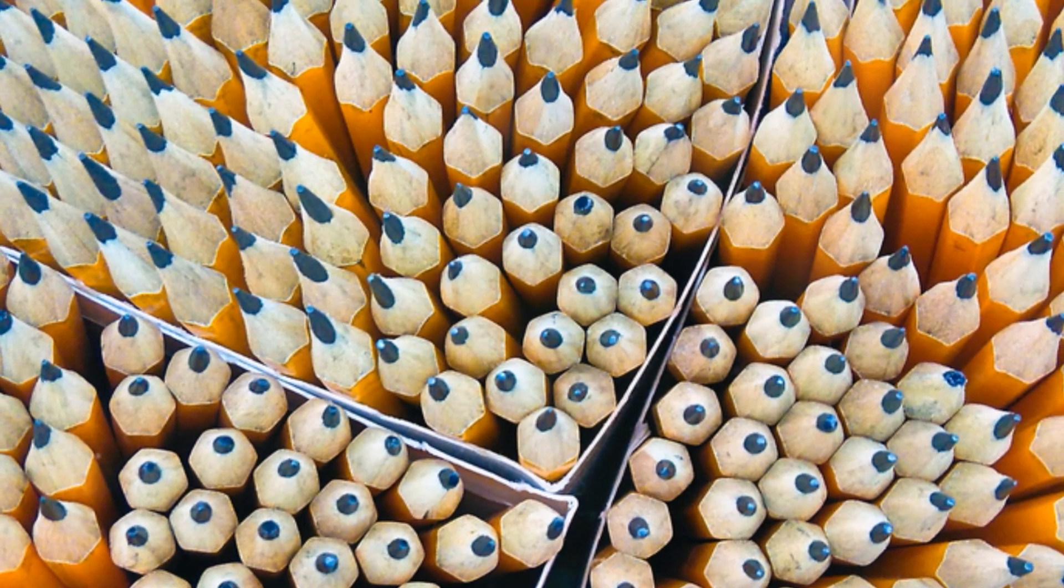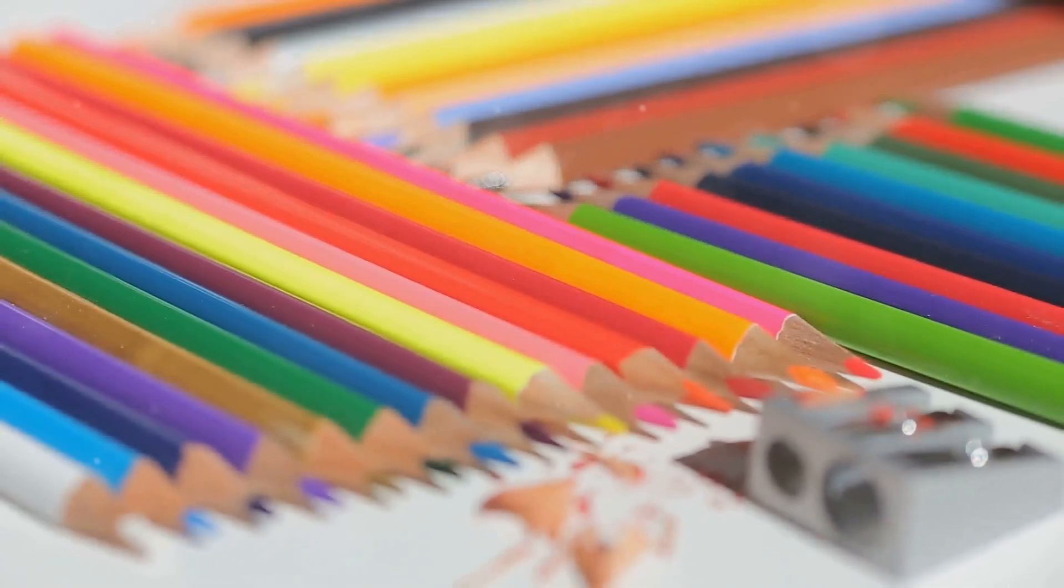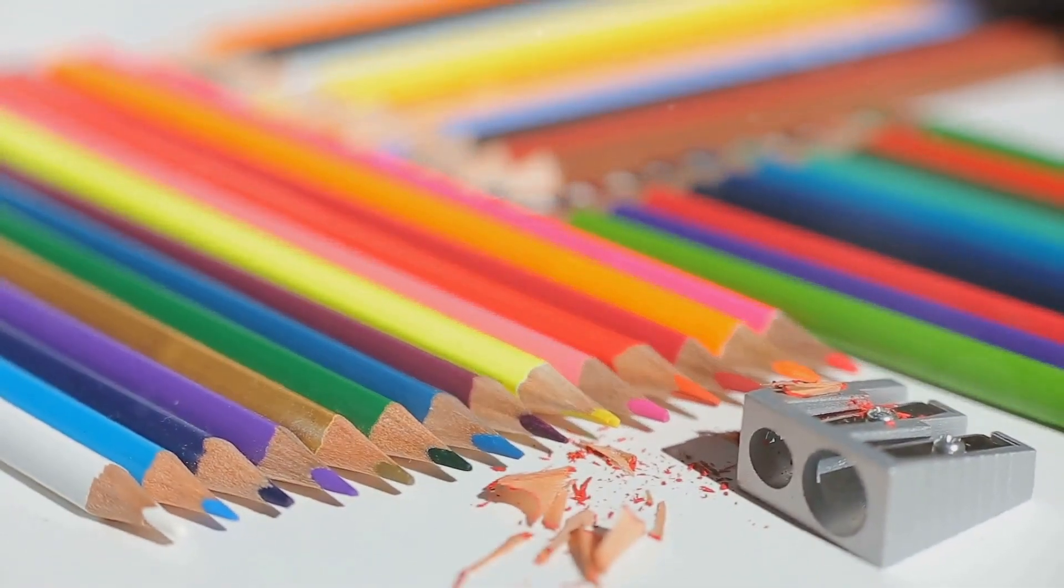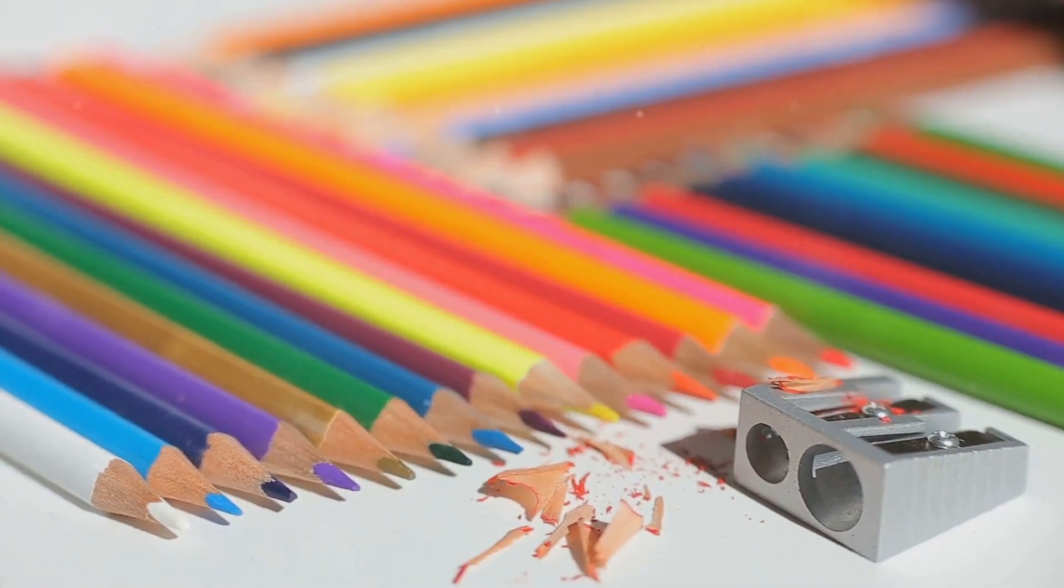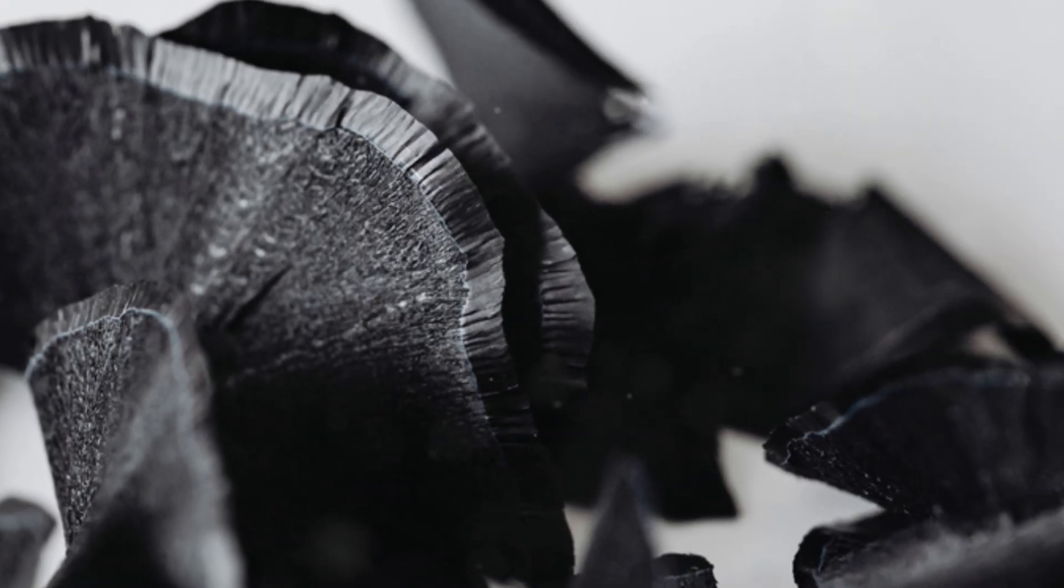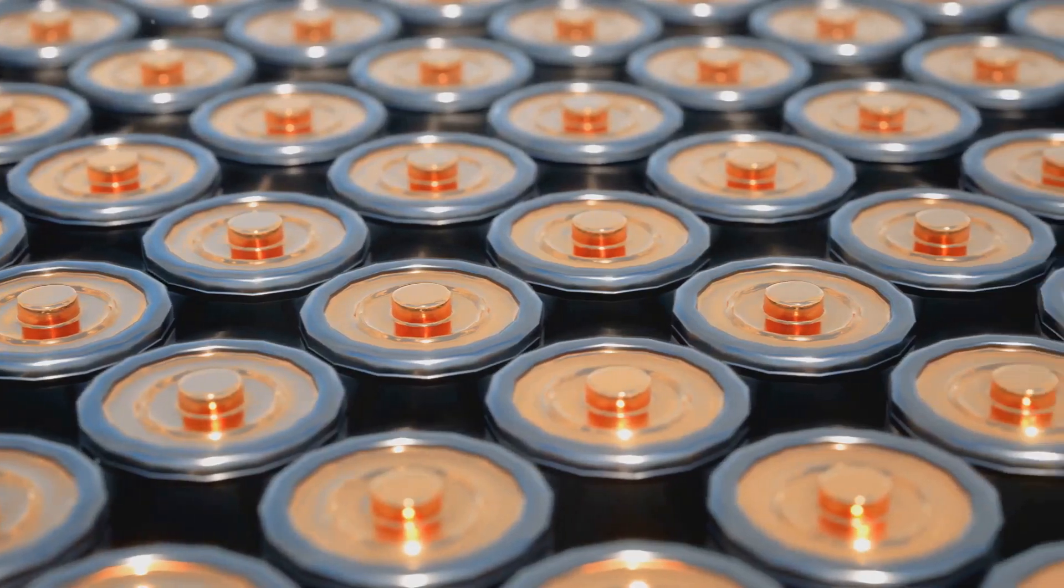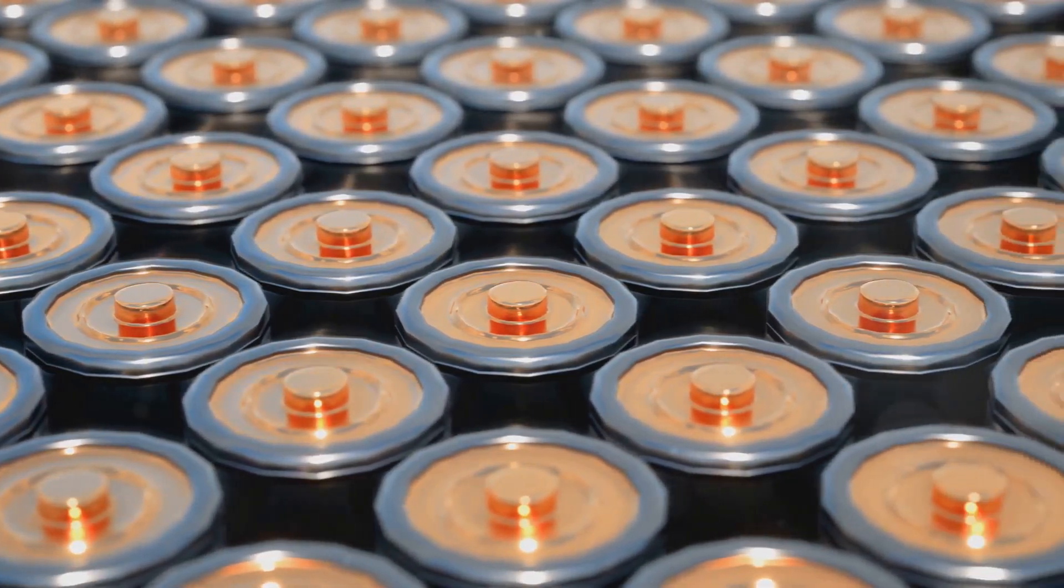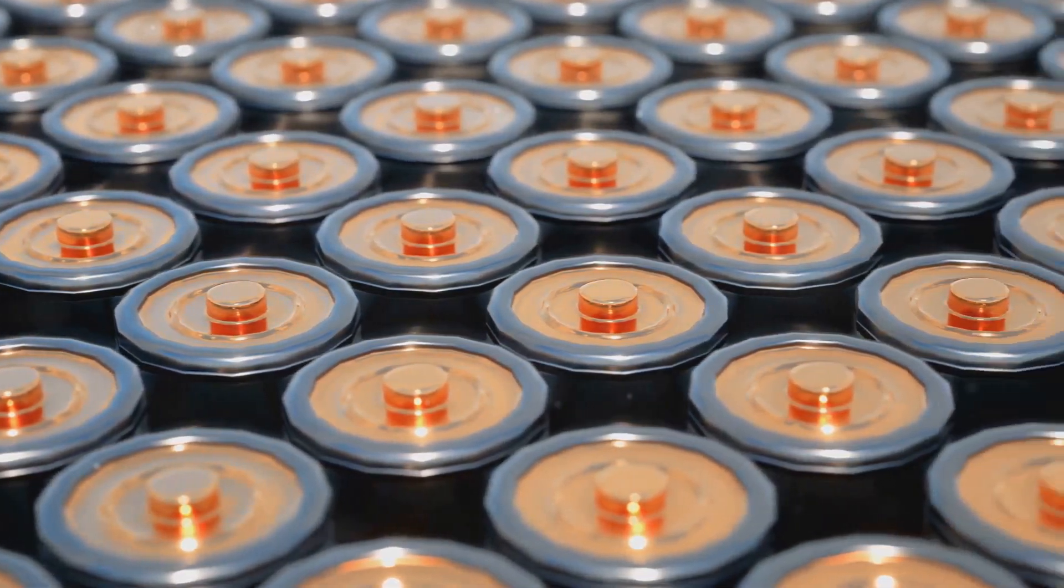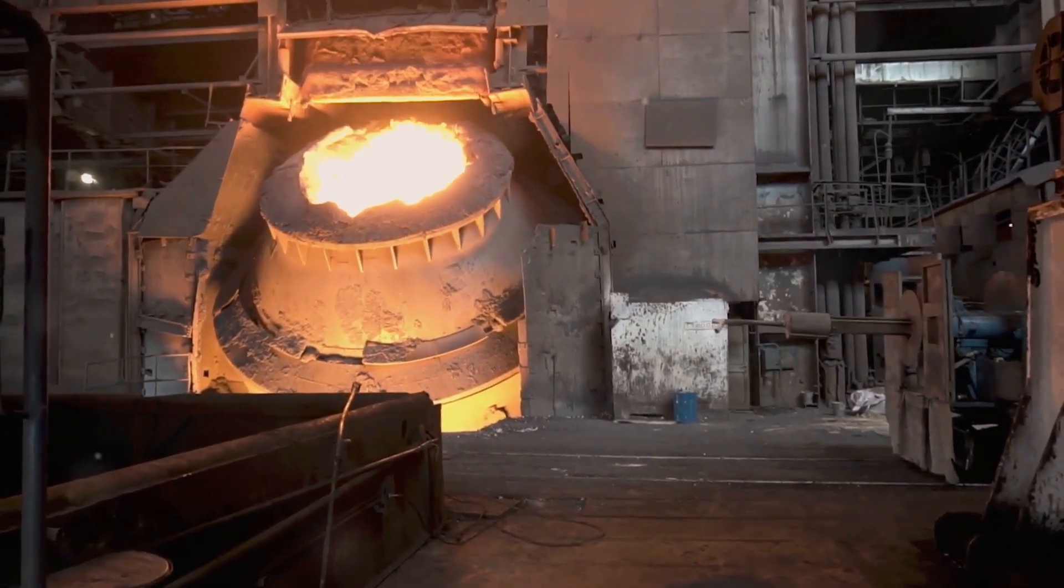Graphite's softness is also key to its versatility. By adjusting the ratio of graphite to clay, pencil makers can create leads of varying hardness, from the faint strokes of a 6H pencil to the bold lines of an 8B. But graphite is more than just a writing material. Its high conductivity makes it essential in batteries and electronics. Its heat resistance makes it ideal for use in crucibles and furnaces.